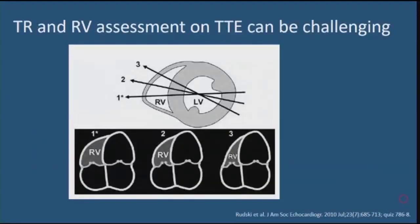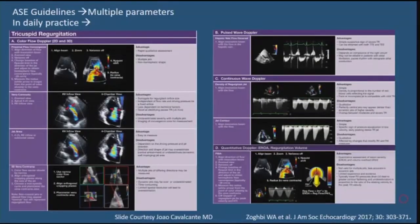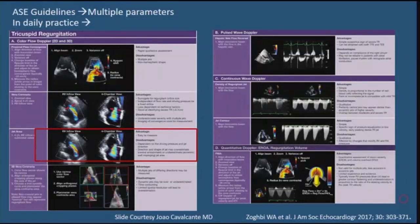Echocardiogram, specifically a TTE, is usually the first step, but evaluation of the right ventricle can be challenging with this imaging modality. The right ventricle is crescent-shaped, and depending on probe angulation the RV chamber size will appear very different. The ASE guidelines recommend using multiple parameters to quantify any regurgitation lesion including the tricuspid valve — parameters that are either qualitative, semi-quantitative, or quantitative. In practice, most people just look at jet area, but that is fraught with difficulties. When using the jet area method, you're estimating how much color regurgitant flow there is in relation to the right atrium. If there's severe TR, the right atrium is enlarged, so by proportion the jet appears smaller than it is.